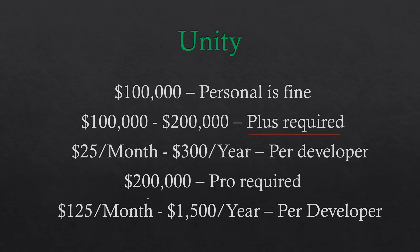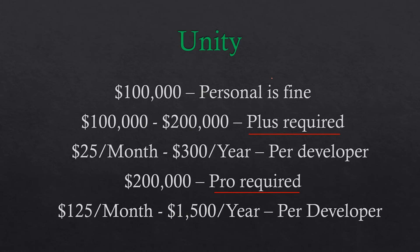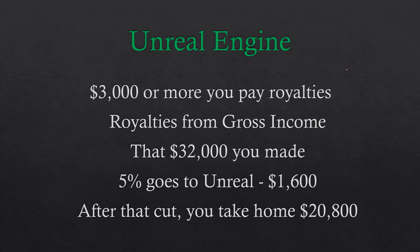After you make $200,000, you have to go Pro at $125 a month or $1,500 a year per developer. If your game stays relatively low in revenue, Unity is a great option. Unreal Engine seems really great at first, but once you start making more, they actually take a lot. Their model is kind of deceptive because you don't realize how much you're actually going to pay them — though it is a really great engine.